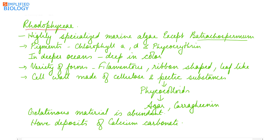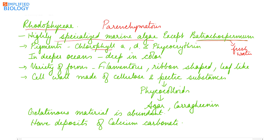Rhodophyceae, or the red algae, are highly specialized marine algae, with the only exception being Batrachospermum, which is a freshwater form. The thallus of red algae is parenchymatous. The pigments present are chlorophyll a, d, phycoerythrin, and some phycocyanin. Those found in deeper oceans are deep red in color, because only blue-green light reaches deep inside the water, which is absorbed by phycoerythrin. Red algae found in shallow waters generally appear green or blue due to more chlorophyll a or phycocyanin.